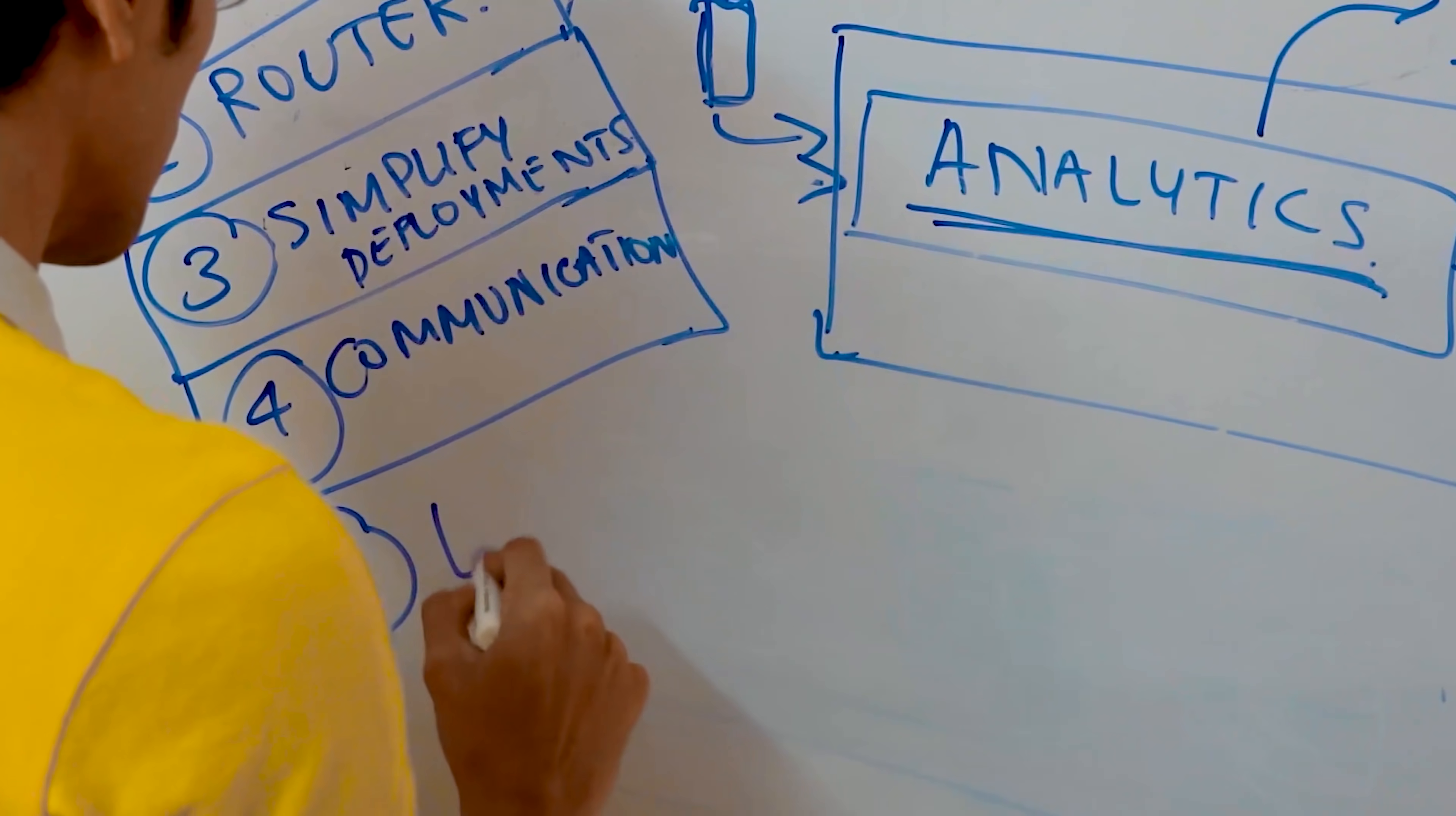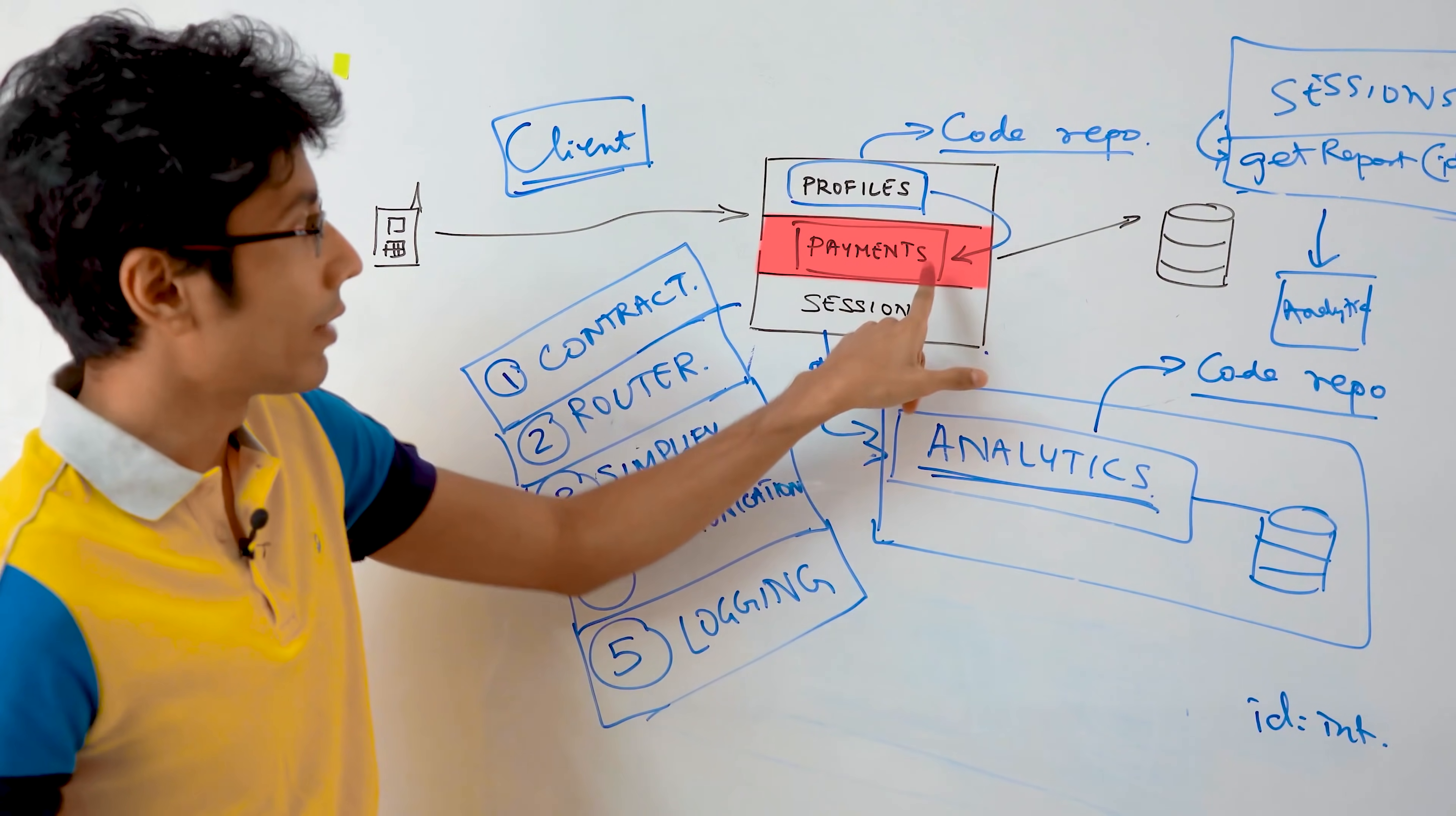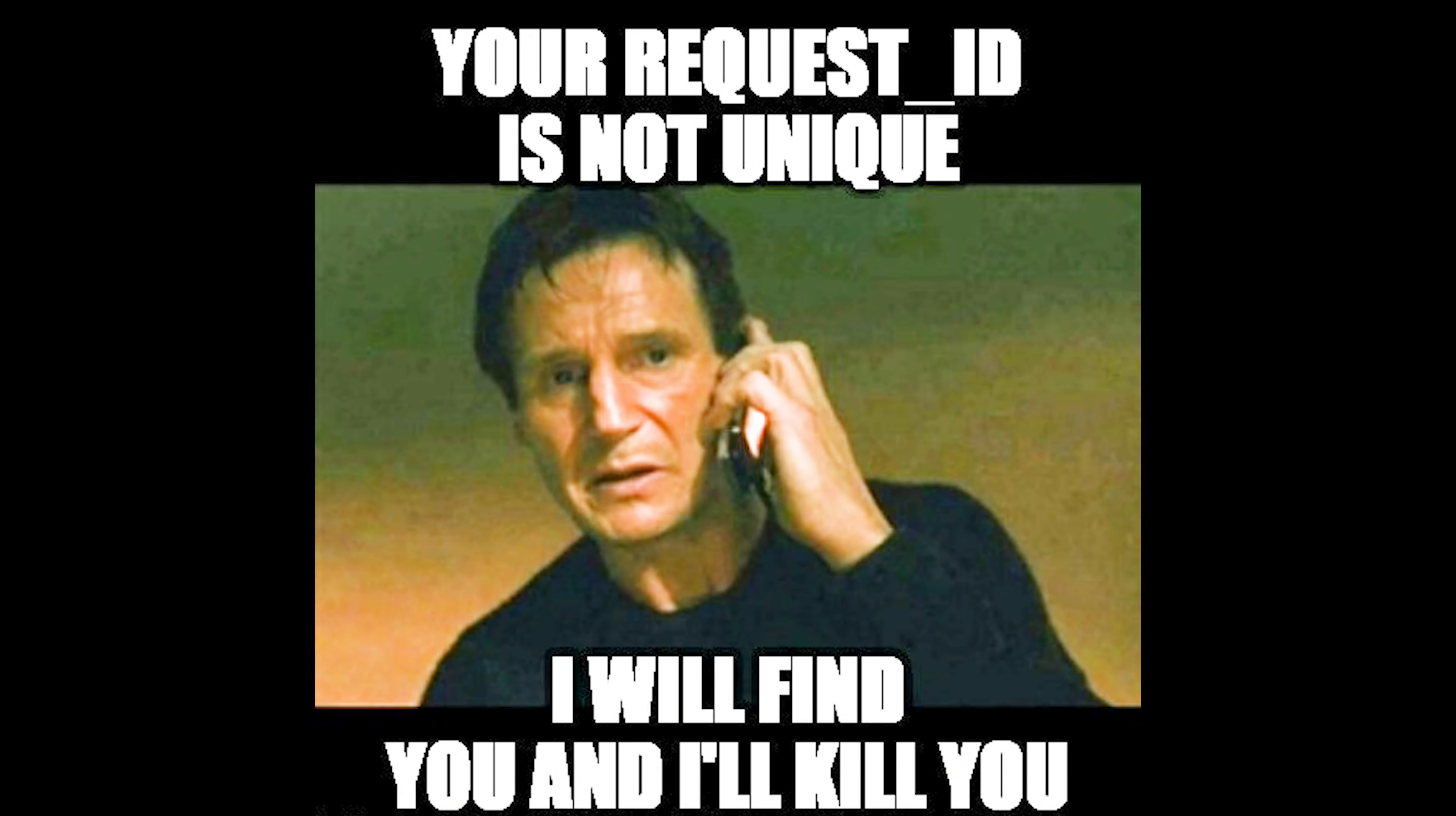Point number five, which is the thing that most people forget is logging. This is super important. If a request is sent from the user to the session service, then it goes to analytics, which triggered something in profiles, and then it went to payments. There's no way that you can track all this by logging into each service and then checking their logs and saying, oh, the ID will be over here also. And then you go here and here, it's not going to happen.